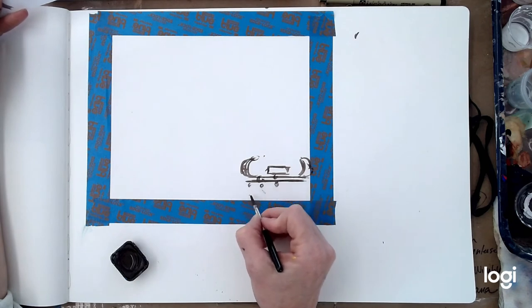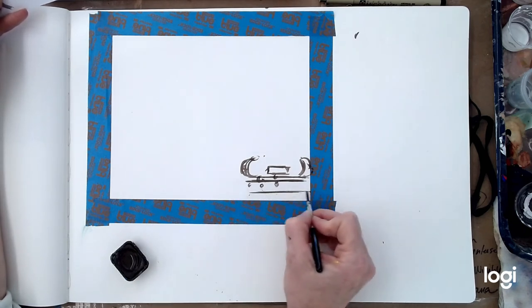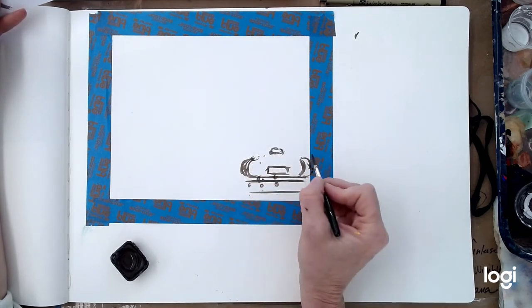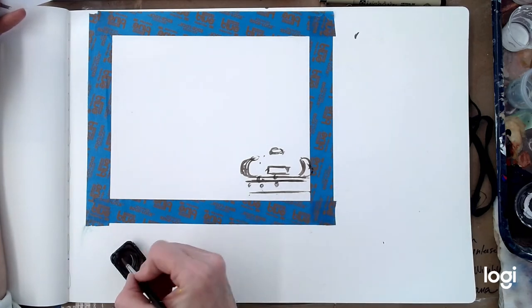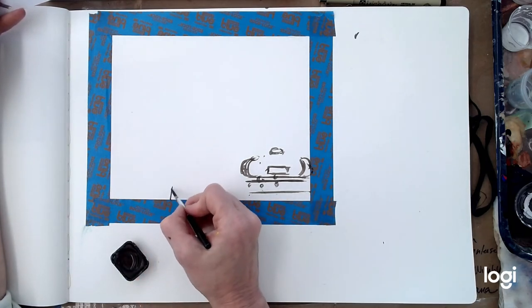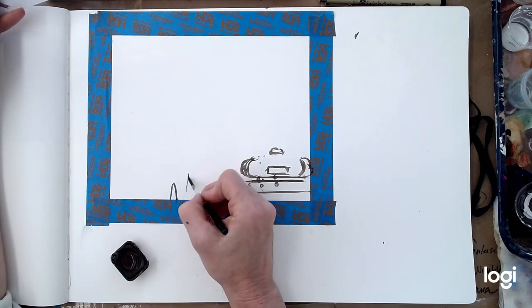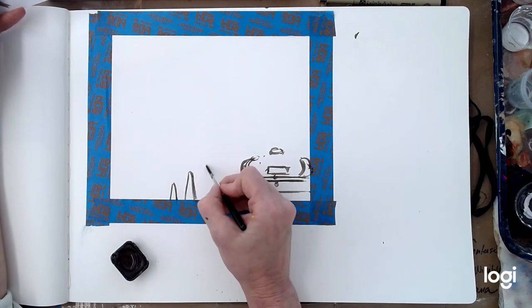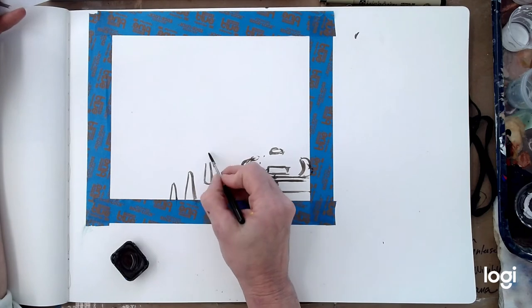When you're sketching and you're sketching the same thing over and over again, the more you do it the better you're going to get at it. So that holds true for things like this too. A working sketch or a thumbnail sketch will actually help you when you go to the real thing because you've drawn it before.